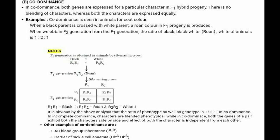When we obtain the F2 generation from the F1 generation, the ratio of black to roan to white animals is 1:2:1. You can see in the diagram that in black and white coat color, the alleles are represented as R1R1 for black and R2R2 for white. The F1 offspring are R1R2, showing roan color. In F2, crossing R1R2 gives R1R1, R1R2, and R2R2 — that is, black, roan and white in 1:2:1 ratio.